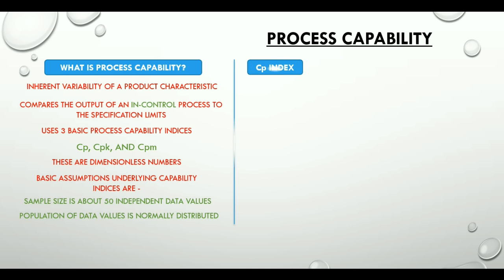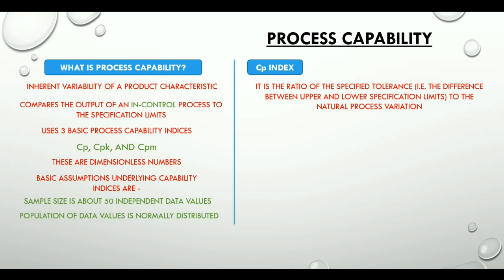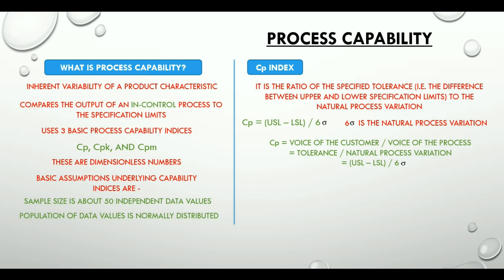CP index is the ratio of the difference between the upper and lower specification limits to the natural process variation. Symbolically it is USL minus LSL divided by 6 sigma. It is interesting to know here that CP actually is the ratio of voice of the customer to the voice of the process, that is tolerance to natural process variation.